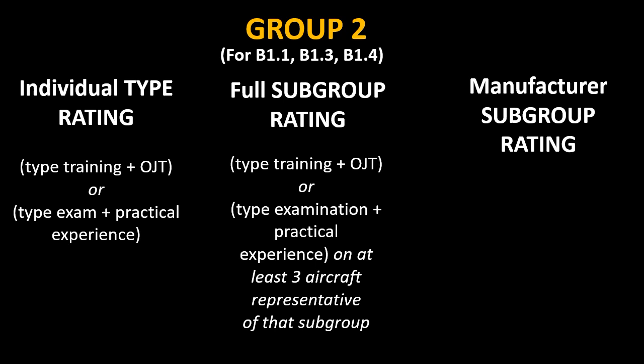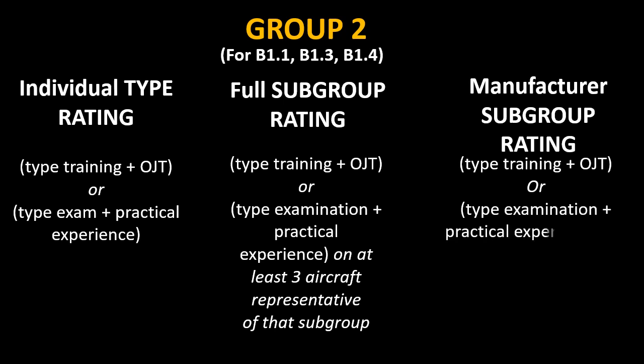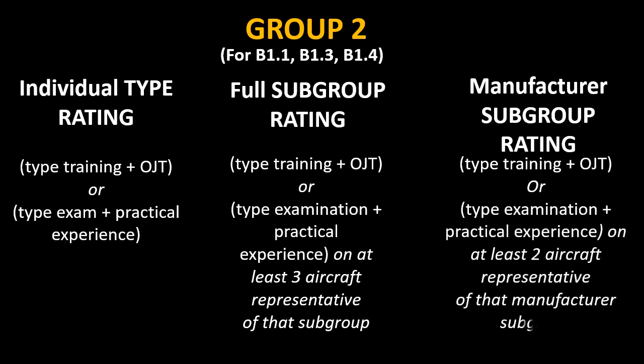For manufacturer subgroup rating, you can have type training plus OJT, or you can have type examination plus practical experience on at least two aircraft representative of that manufacturer subgroup.